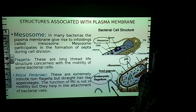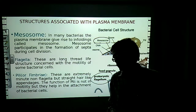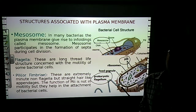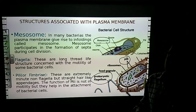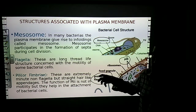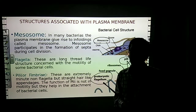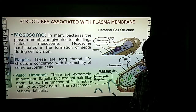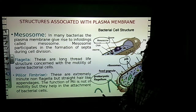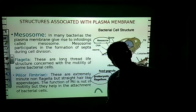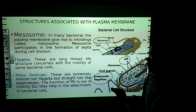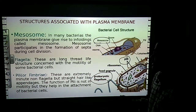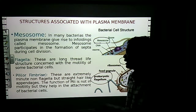Fimbriae also help in conjugation. Conjugation is a type of reproduction which takes place in bacteria — when two bacteria combine and conjugate, genetic material needs to be transferred between them, and fimbriae help in this process.